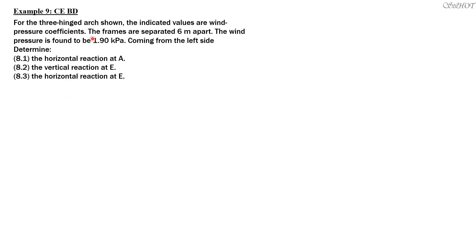Let's have the solution to Example 9. For the three-hinged arch shown, the indicated values are wind pressure coefficients. The frames are separated 6 meters apart. The wind pressure is found to be 1.9 kilopascals coming from the left side. Determine the horizontal reaction at A, the vertical reaction at E, and the horizontal reaction at E.